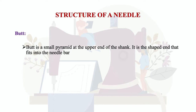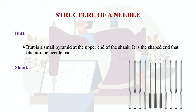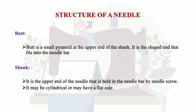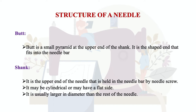The next part is the shank — the upper end of the needle held in the needle bar by the needle screw. When mounting the needle into the sewing machine, the part that goes into the needle bar is the shank. It may be cylindrical or have a flat side, and it is usually larger in diameter than the rest of the needle.